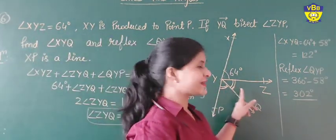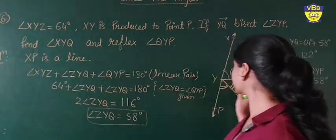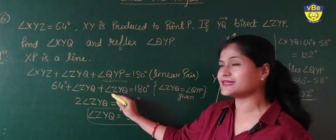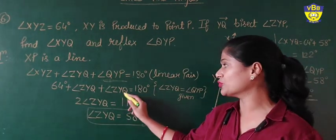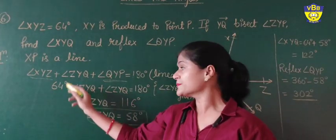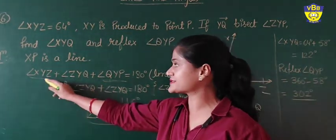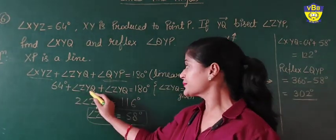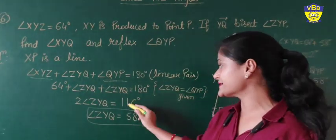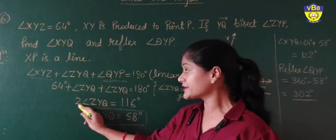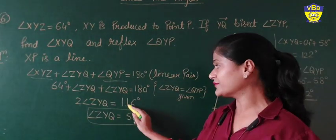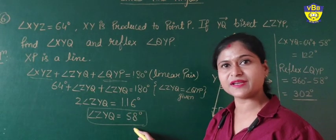But these two angles are equal, so we can write only one. I am selecting angle ZYQ, so in place of angle QYP I am also writing ZYQ. So twice of ZYQ plus XYZ equals 180 degrees. XYZ is given as 64 degrees, so twice of ZYQ equals 180 minus 64, which is 116 degrees. Dividing by 2, angle ZYQ equals 58 degrees.